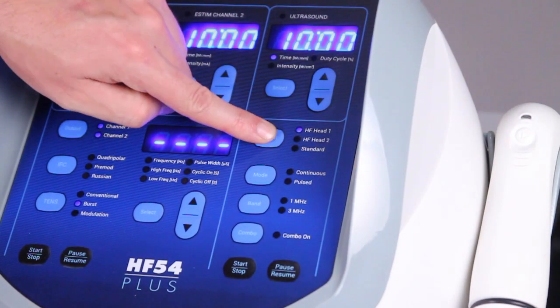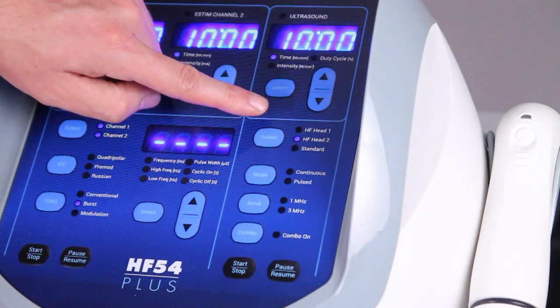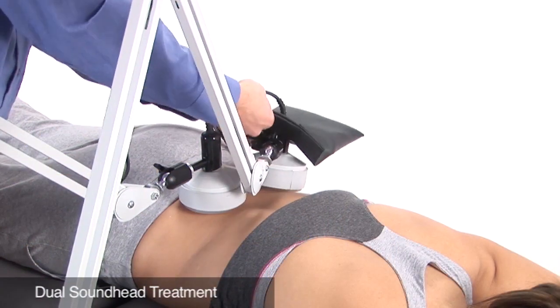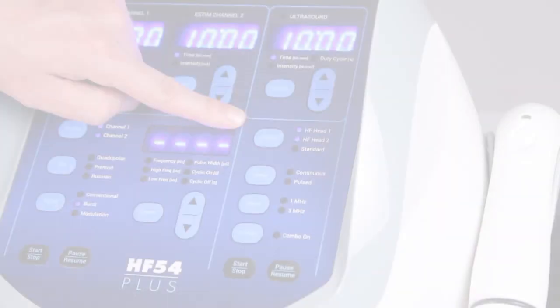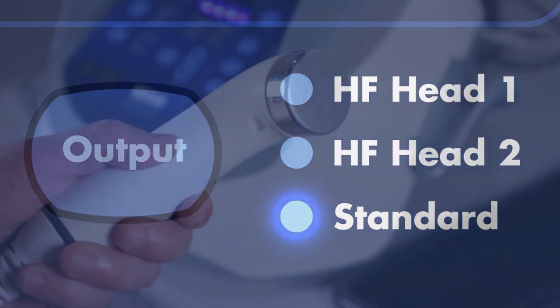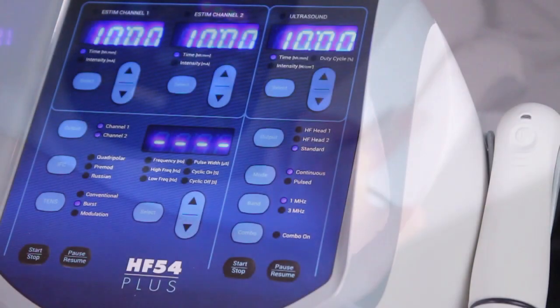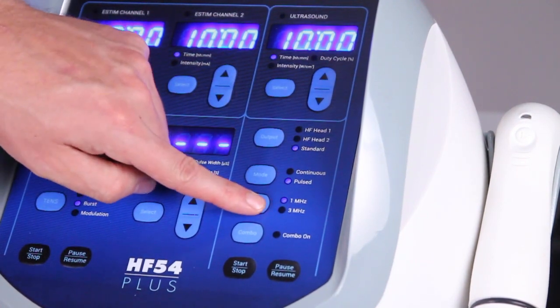To treat with two sound heads simultaneously, press the output button twice until both sound heads are selected. In this mode, all settings will be shared by both sound heads. Press the output button again to select standard for ultrasound using the optional handheld applicator. Select either continuous or pulsed mode at one or three megahertz settings.